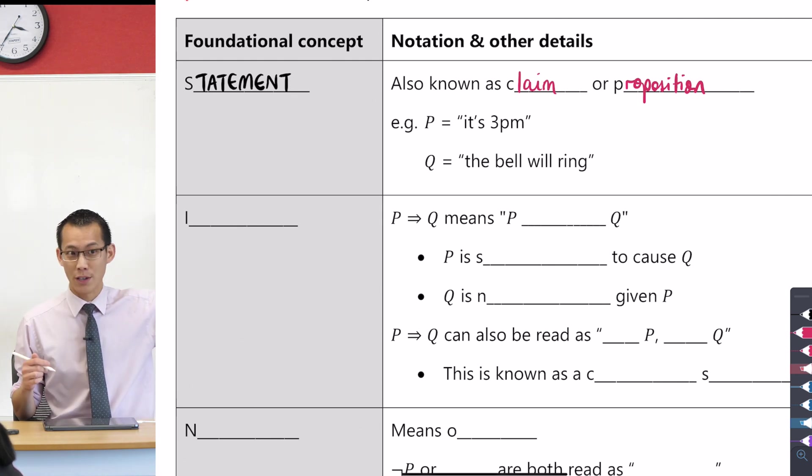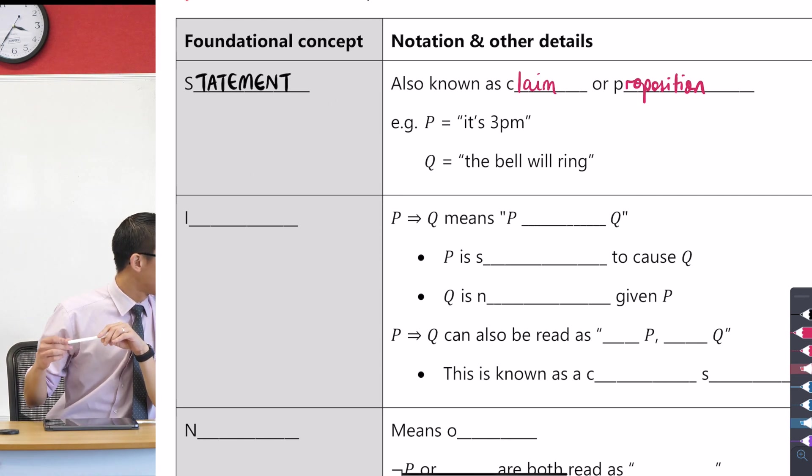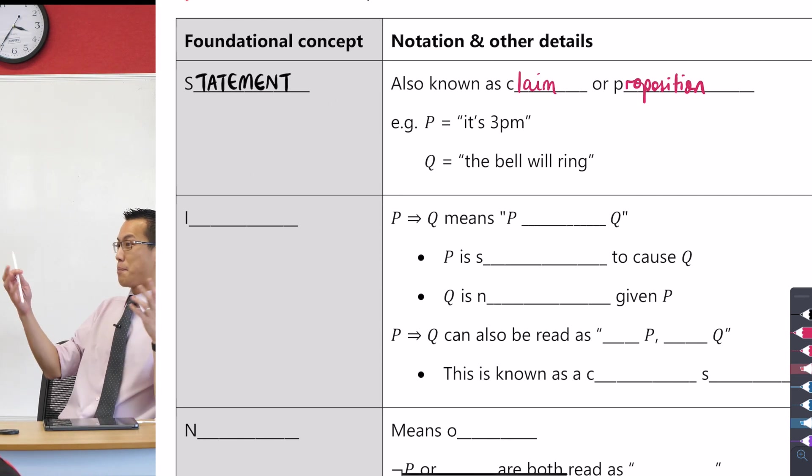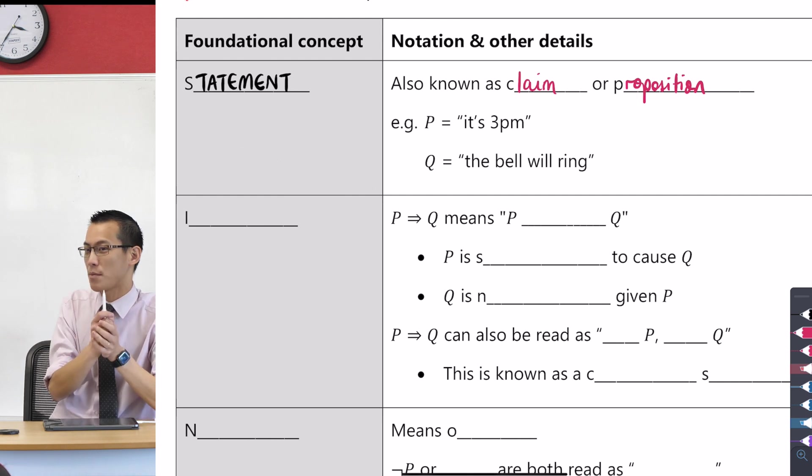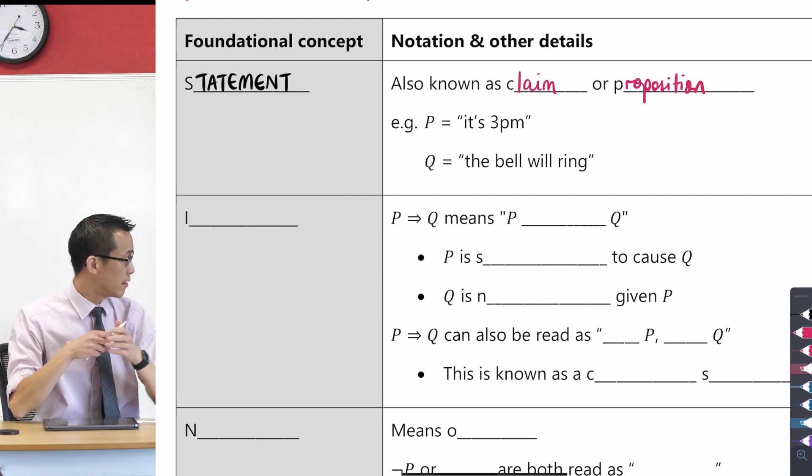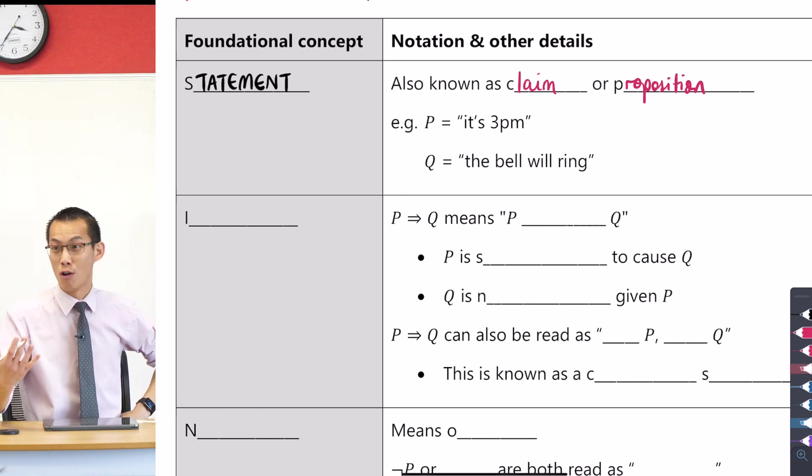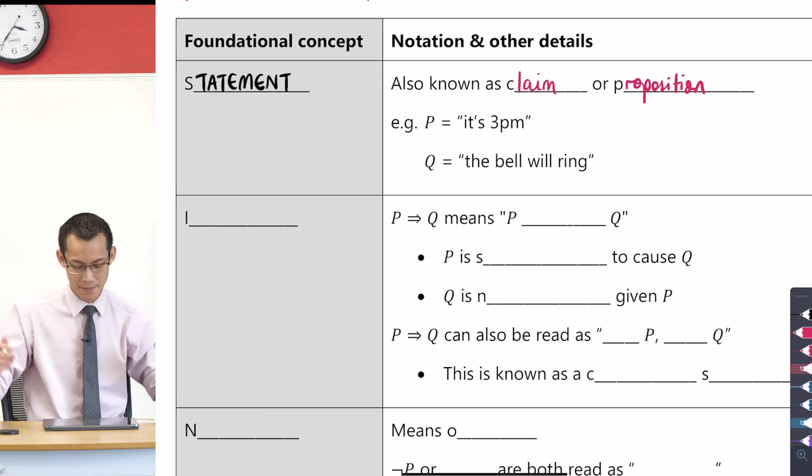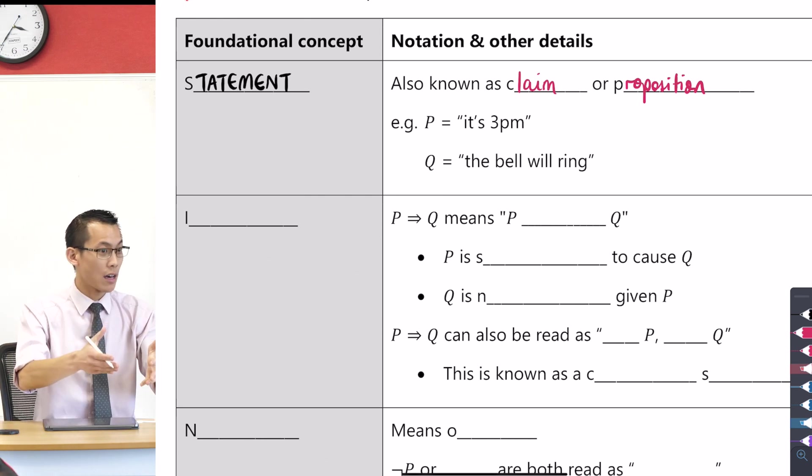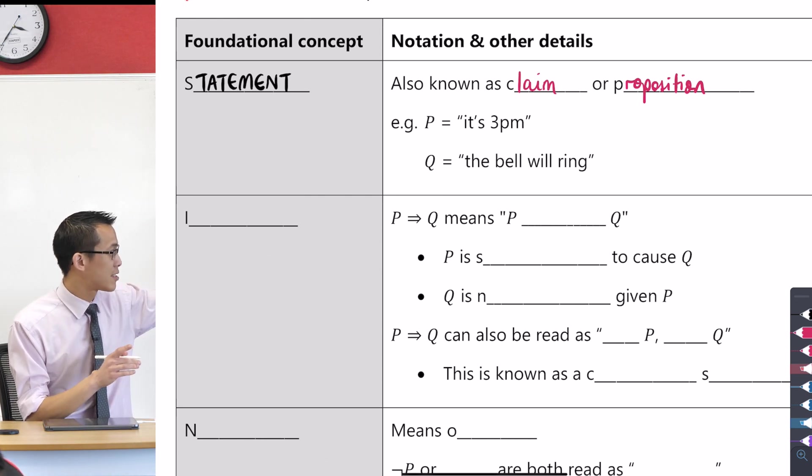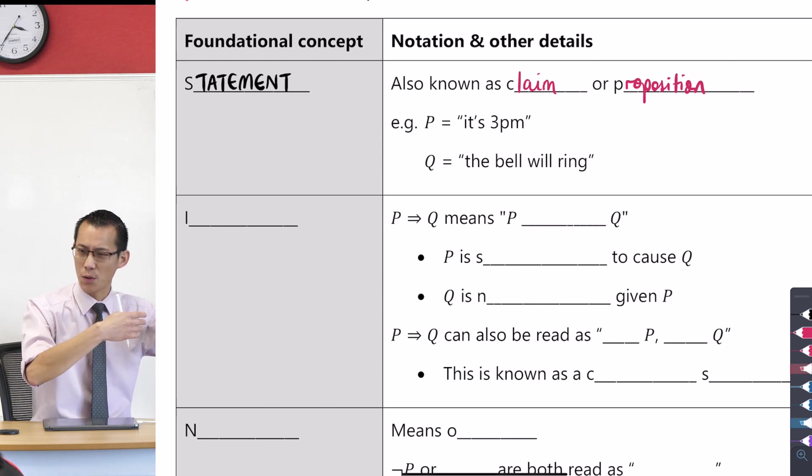So just as some examples here, and it's not just because it's the last period of the day, and this is what I'm thinking of, but potentially, you might have these statements, P and Q, in your head. It's 3 p.m. That's a statement. I claim it is 3 p.m. right now. I'd be wrong at this exact moment, but I can still claim it. The bell will ring. That's another statement. And you're going to see, we're going to put these together in lots of different ways.